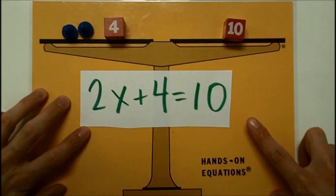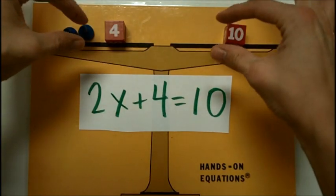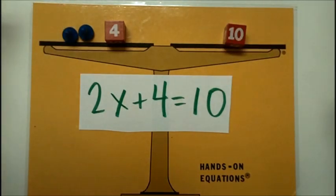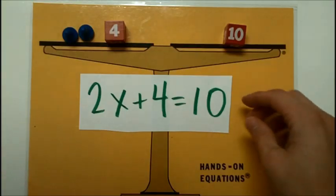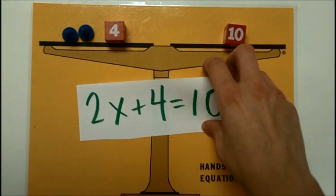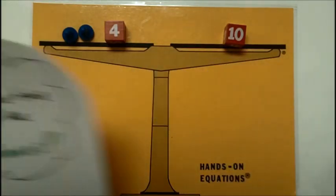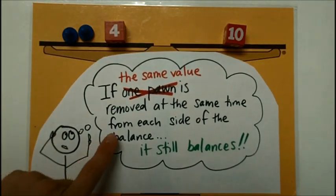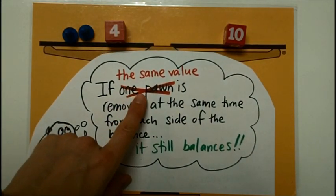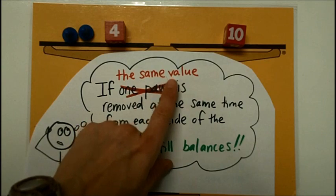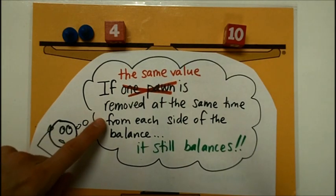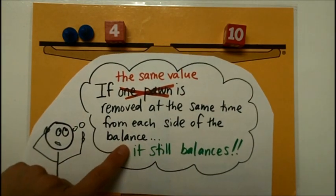In the last lesson, we learned that for legal moves, you could remove one pawn from each side at the same time and still keep the scale balanced. Well, this time we're going to change it a little bit so that we are not only saying if one pawn, but if anything that's the same value is removed at the same time from each side of the balance, it still balances.